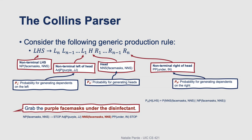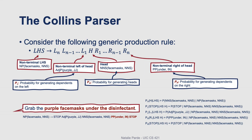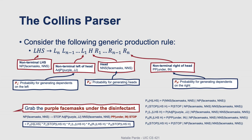Then we would move on to computing the probabilities for the non-terminals to the left of the head. So in this case, we'd find the probability of the stop non-terminal given the left-hand parent constituent and the head non-terminal, along with the probability of the adjective phrase given the left-hand parent constituent and the head non-terminal. Then we'd finally move on to computing the probabilities for the non-terminals to the right of the head — the probability of the prepositional phrase, and finally the probability of the stop non-terminal, both given the left-hand parent constituent and the head non-terminal. To estimate the overall probability for our production rule, we just multiply those probabilities altogether.